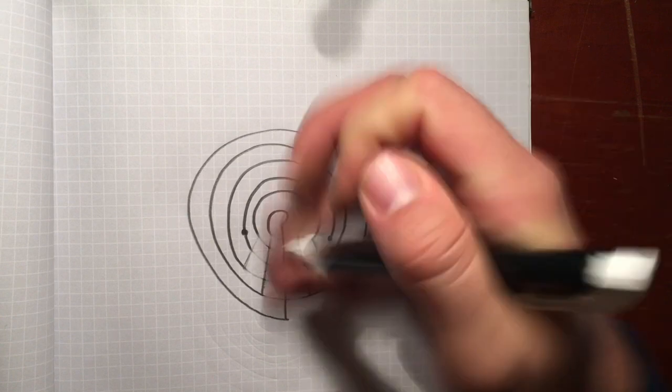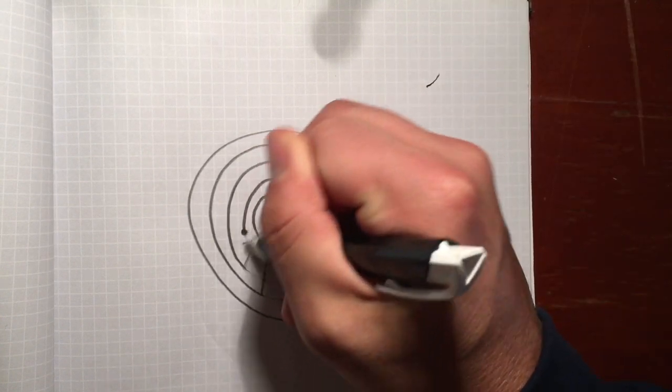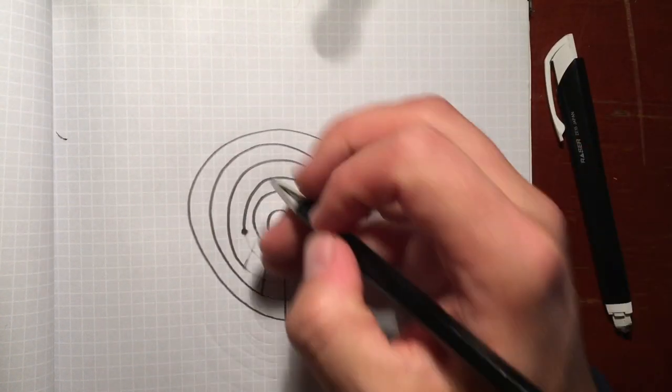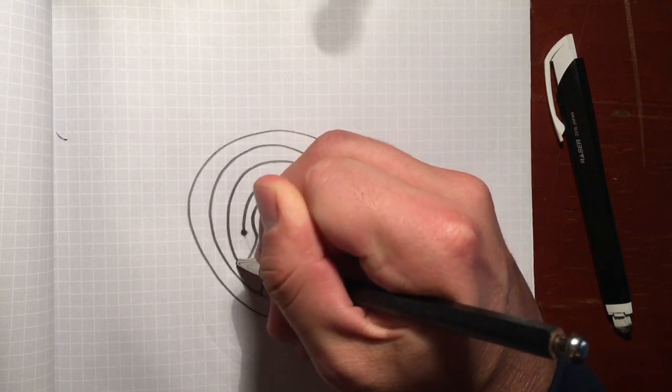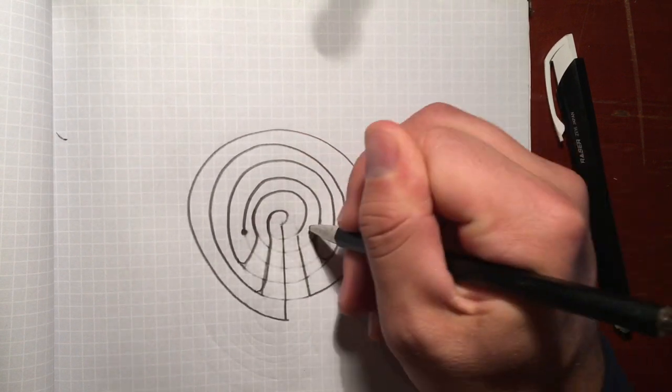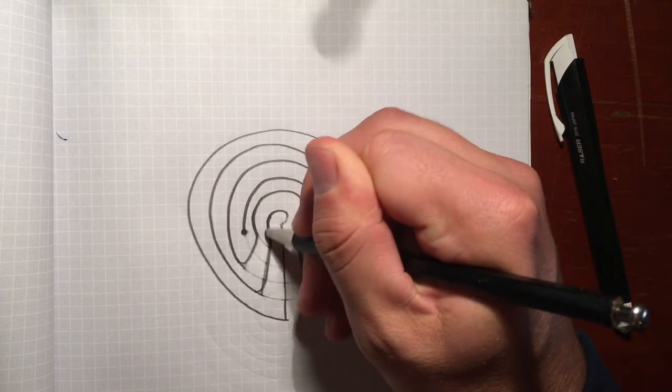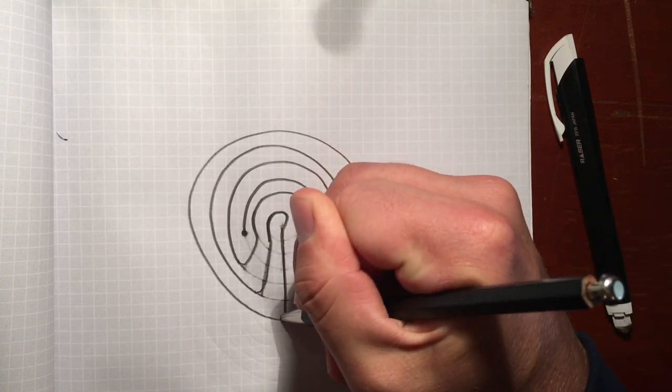One inside the other, and then finally at your line ends. And there you have a five-circuit Classical Labyrinth from a spiral.